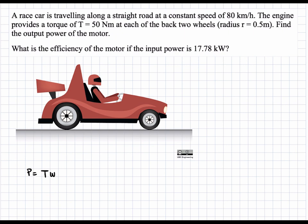We have the input torque of 50 newton meters but not the angular velocity. However, we can find the angular velocity given the wheel dimensions and the velocity of the car. Assuming no slipping between the road and the wheel, the instantaneous center of zero velocity is located at the bottom of the wheel. At the axle, the velocity equals the car's velocity of 80 kilometers per hour. Given these two points, we can determine the angular velocity and from it the output power.